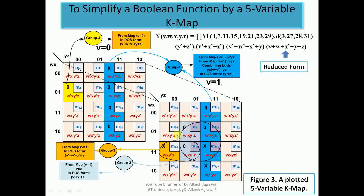Group 2 has three max terms with one don't care condition making a group of four, confined entirely to the V=1 map. In POS form, since V=1 we write V̅. Focusing on rows 2 and 3, W changes and X is fixed to one, so we write X̅. In columns 2 and 3, YZ is 01 and 11, so Y changes and Z is fixed, giving Z̅. The reduced POS form for Group 2 is (V̅+X̅+Z̅).